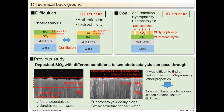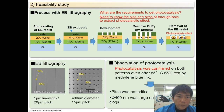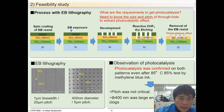We found that it was very difficult to control the structure just by changing the deposition condition of SiO2. We needed another technique to combine. So we asked the nanofabrication platform at the University of Tokyo to use the facility. As a feasibility study, what we needed to know is what kind of size and pitch of the through-hole can transfer photocatalysis through to the surface. To do that, electron beam lithography is a good candidate because it can control the size and pitch precisely.